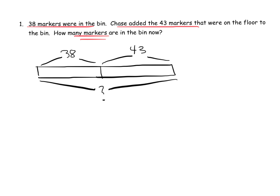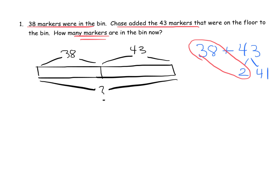Students should recognize that this tape diagram suggests addition is what we need to do. Let's use the number bond method since it makes the most sense here. We do 38 plus 43. Using a number bond, I'll split 43 into 2 plus 41. That's because 38 plus 2 gives us 40, and then 40 plus 41 gives us 81.